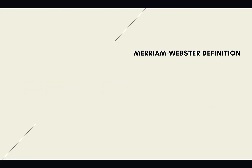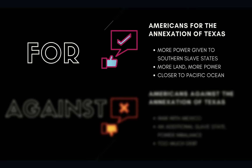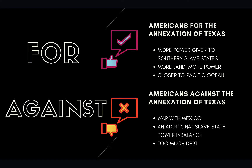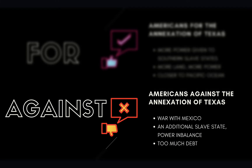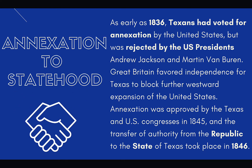But that doesn't mean it came easily. There were groups for annexation — Americans who believed it would give more power to southern slave states, and those who wanted more land because more land meant more power and brought the US closer to the Pacific Ocean. On the other side, Americans against annexation didn't want to go to war with Mexico, feared the power imbalance from an additional slave state, and noted that Texas had enormous debt.